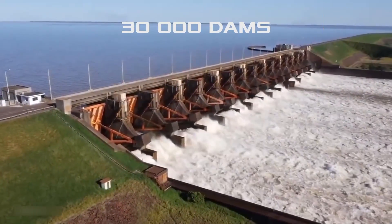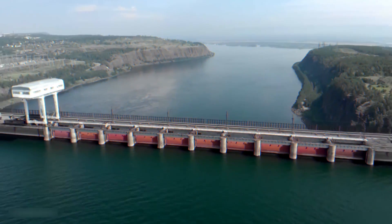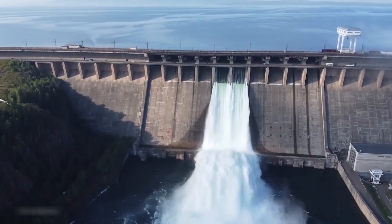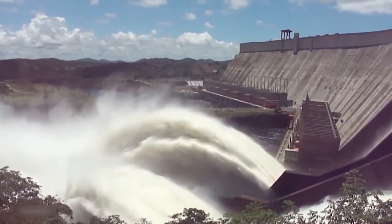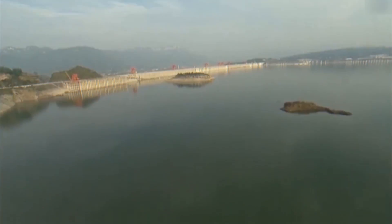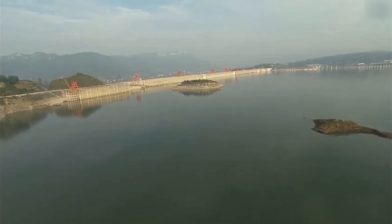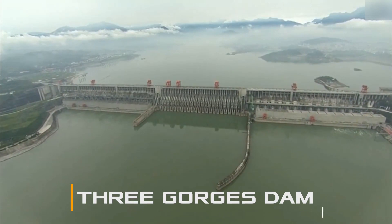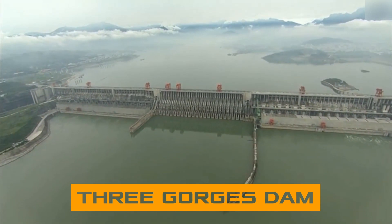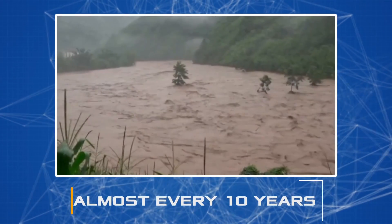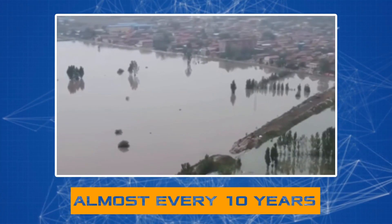Today there are over 30,000 dams in the world. Most of them are created according to standard projects and are designed to help the population with agriculture. But one of them is completely unique with its design. China's Three Gorges Dam was built to protect more than 360 million people from devastating floods that occur almost every 10 years.